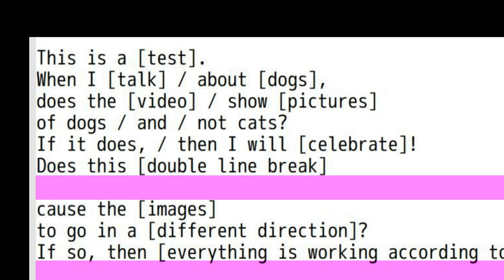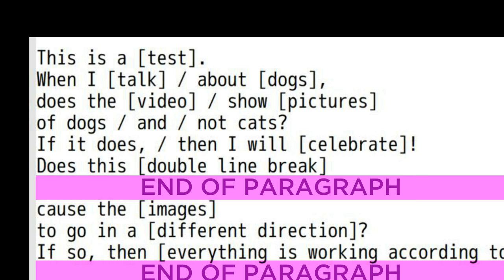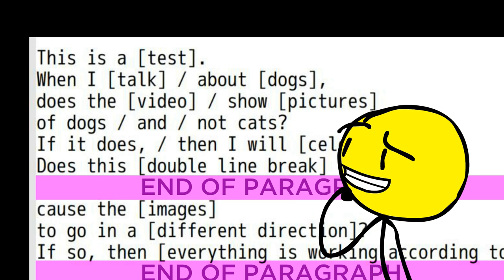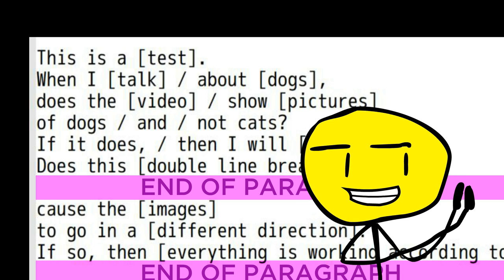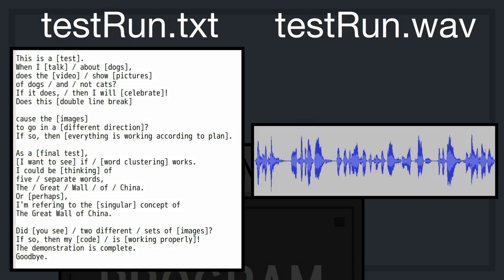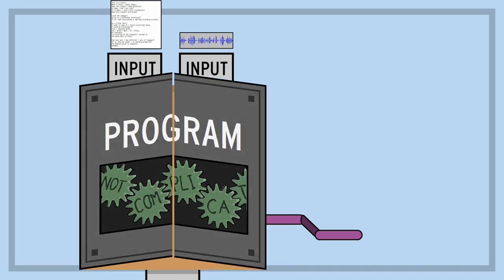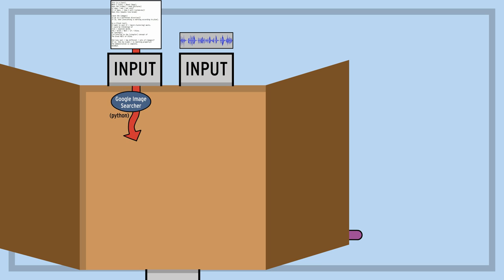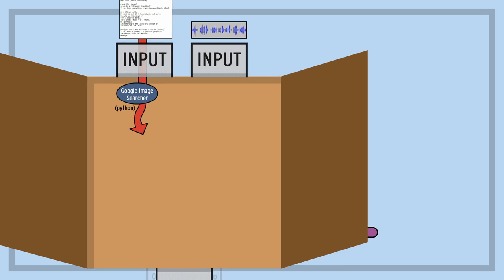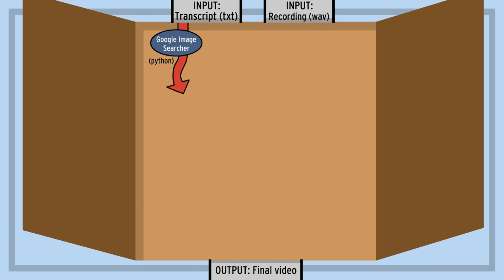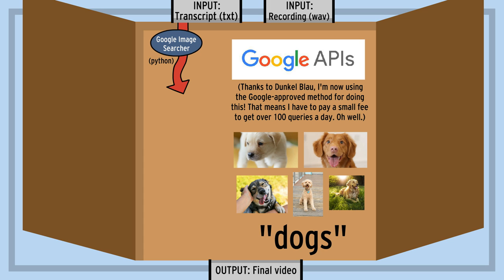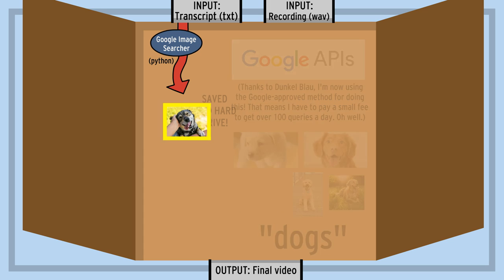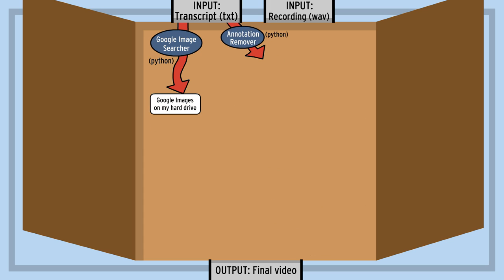Finally, double line breaks indicate an end to a paragraph, which means the final video should somehow depict that the subject material is moving in a different direction. So that's all cool, but what can the computer do with all this info? Well, the first component in our machine is the Google Image Searcher. I wrote a Python script that detects all the topics in the transcript, uses Google's API to collect the top 5 image results for those topics, and then randomly saves one of them to my hard drive.